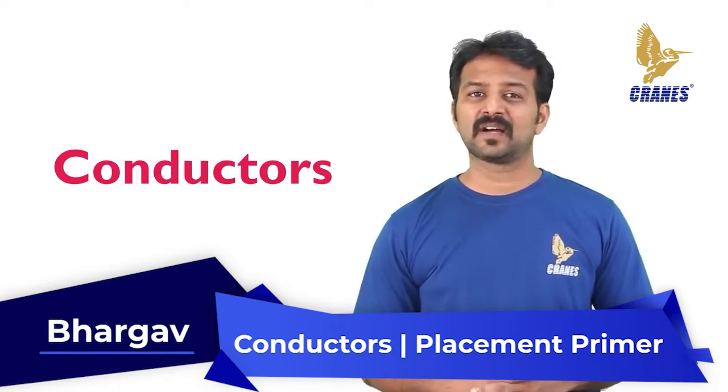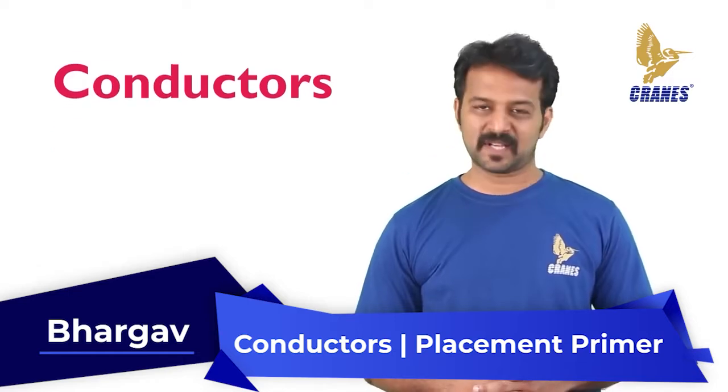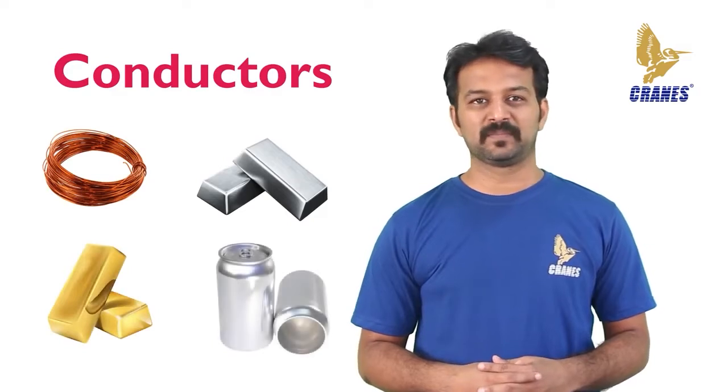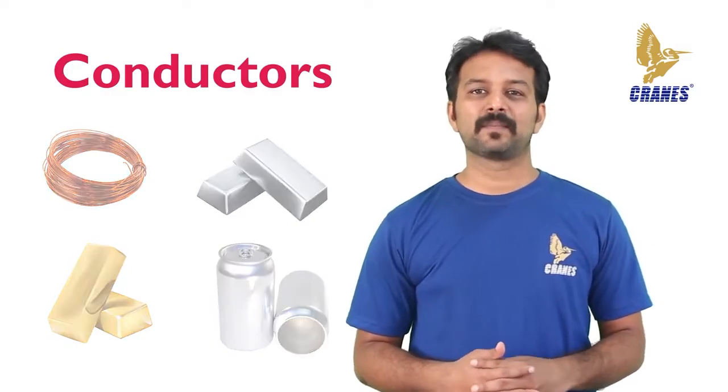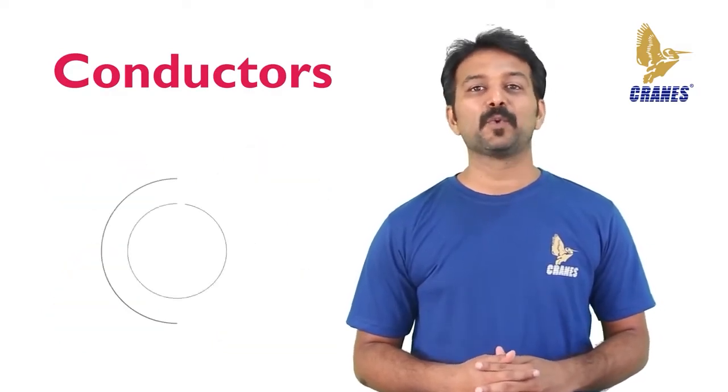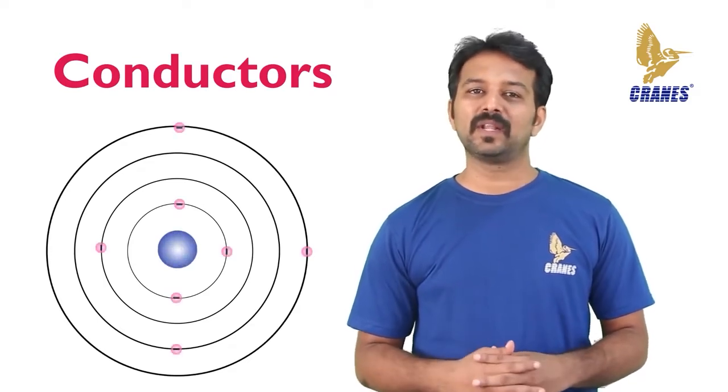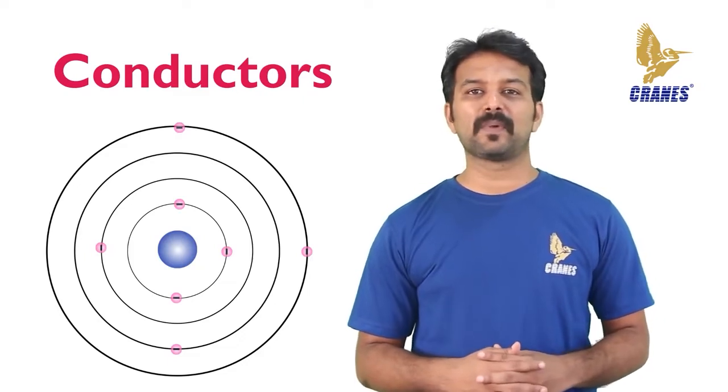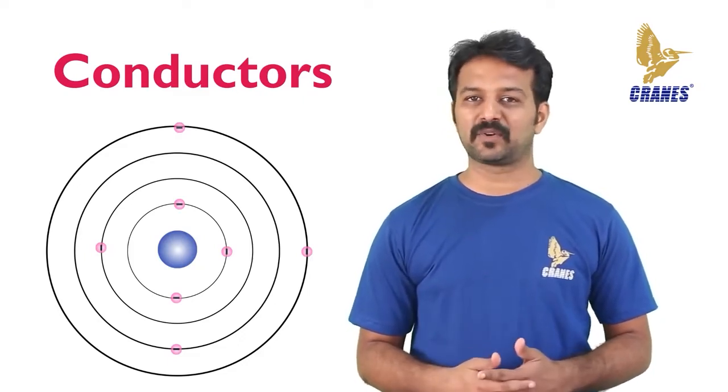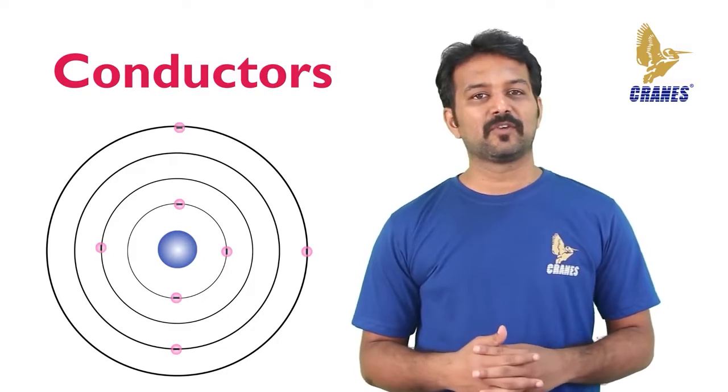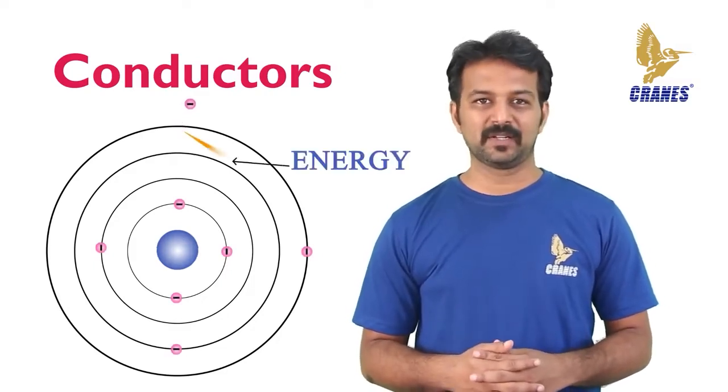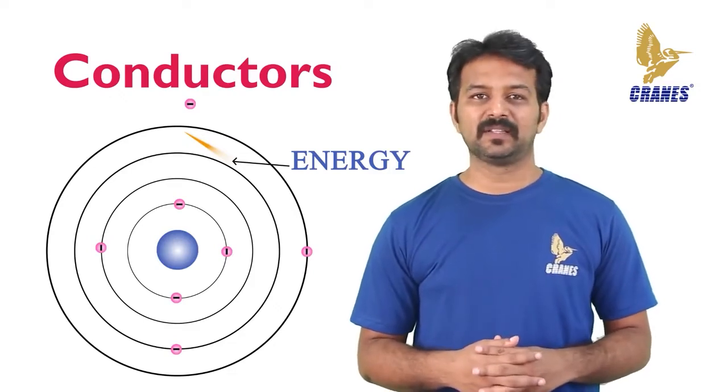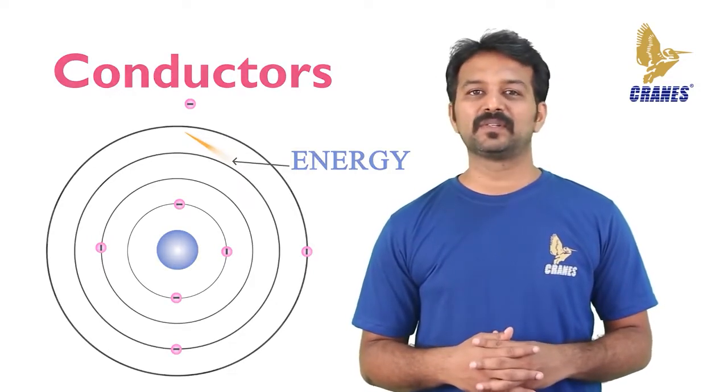The best conductors are single element materials such as copper, silver, gold and aluminum which are characterized by atoms with only one valence electron very loosely bound to the atom. These loosely bound valence electrons can become free electrons with the addition of a small amount of energy to free them from the atom. Therefore, in a conductive material, the free electrons are available to carry the current.